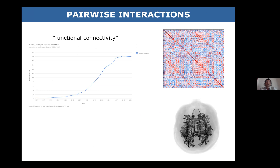Despite progress in computational power — or maybe because of it — and also because of the type of data we can collect, we've become obsessed with the pairwise interaction, in particular the correlation, also given a special name like functional connectivity. Our adjacency matrices are made mostly of pairwise interactions, and our graphs and networks, which we love to project onto the brain, are also mostly made of pairwise interactions.